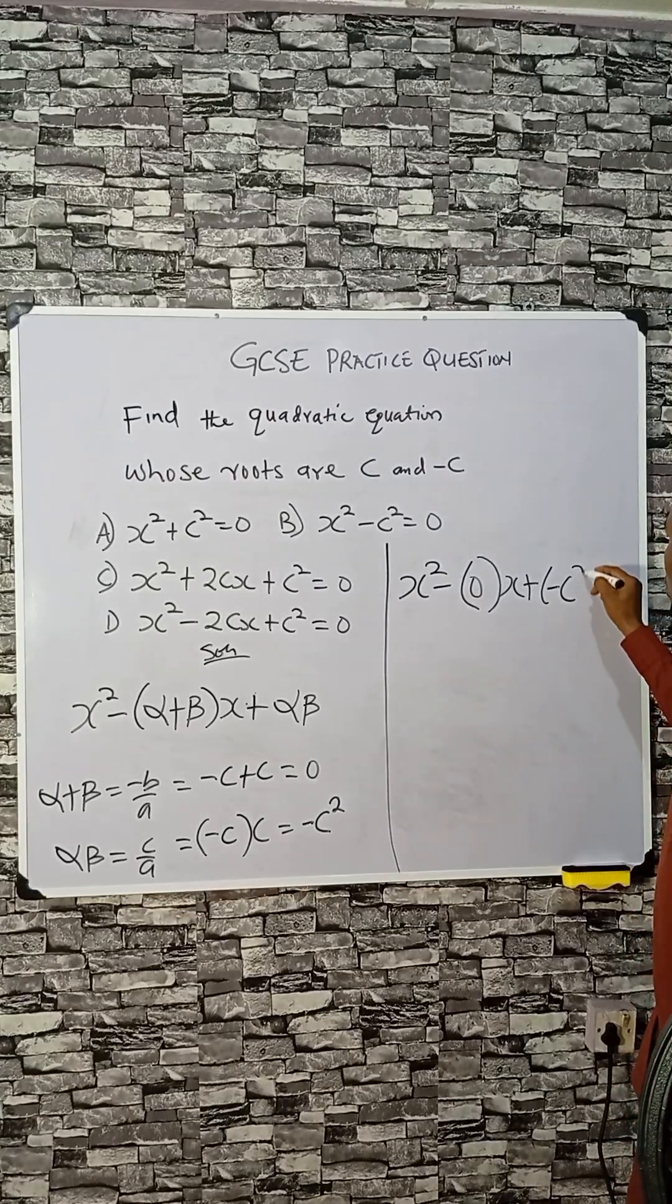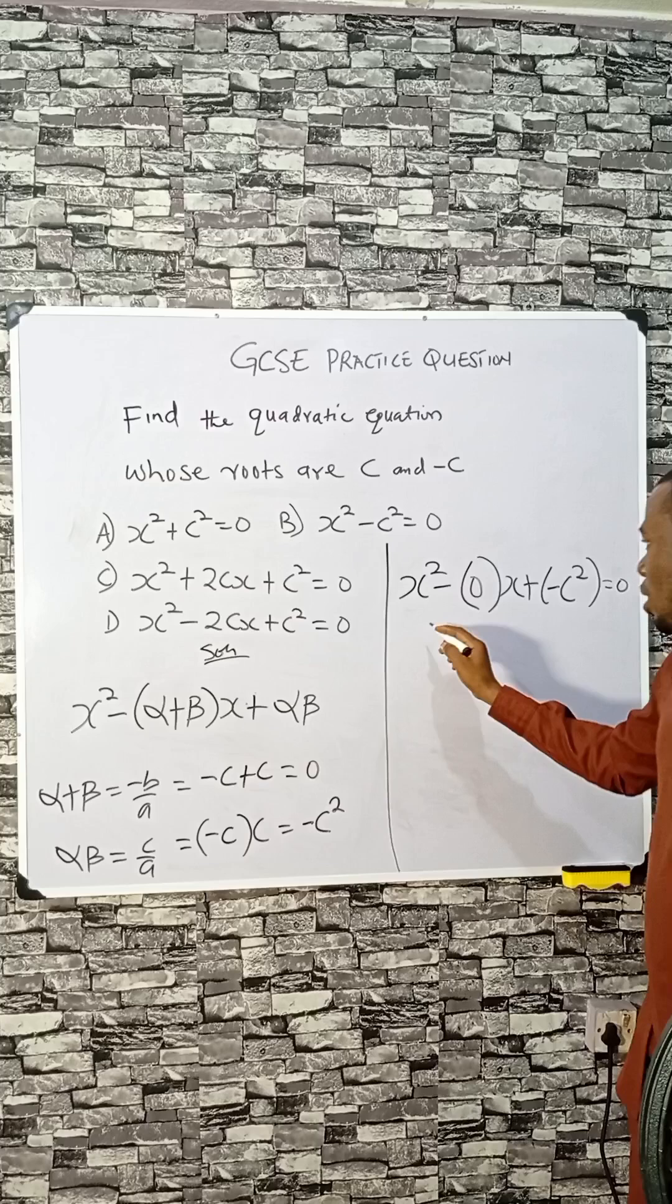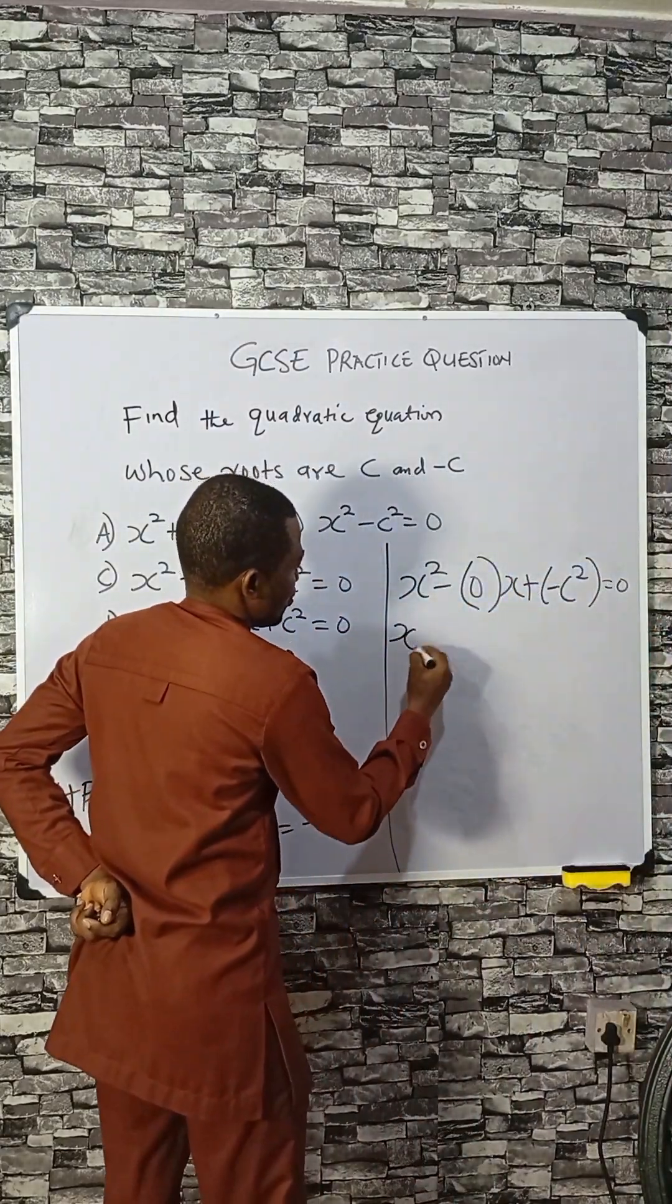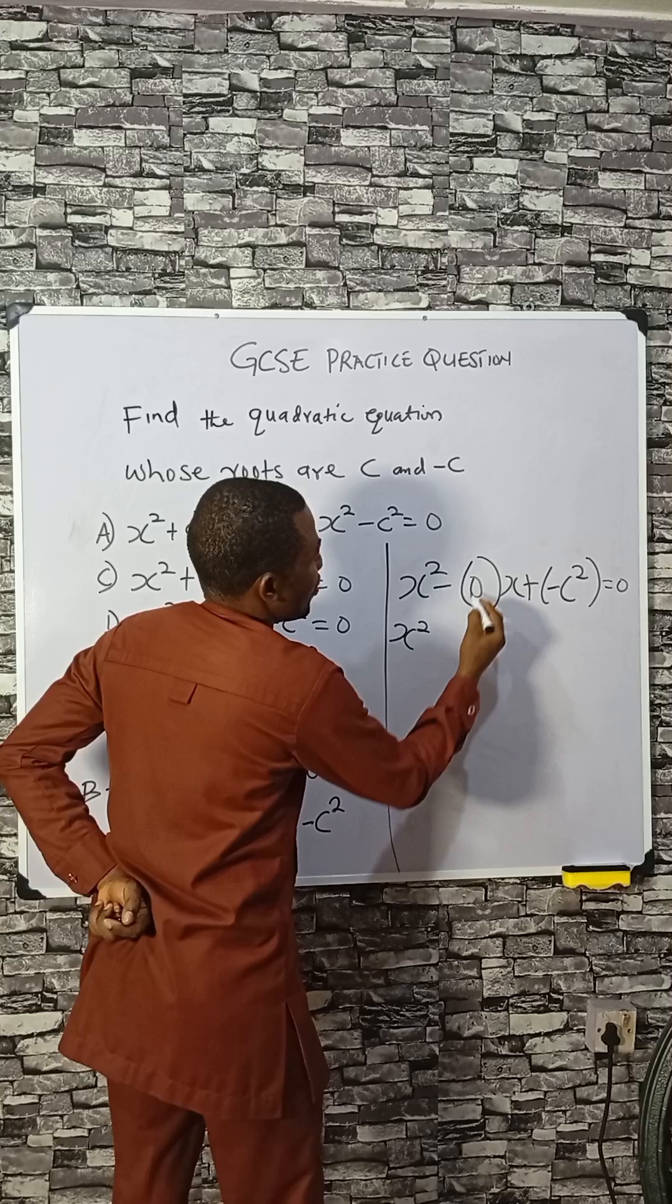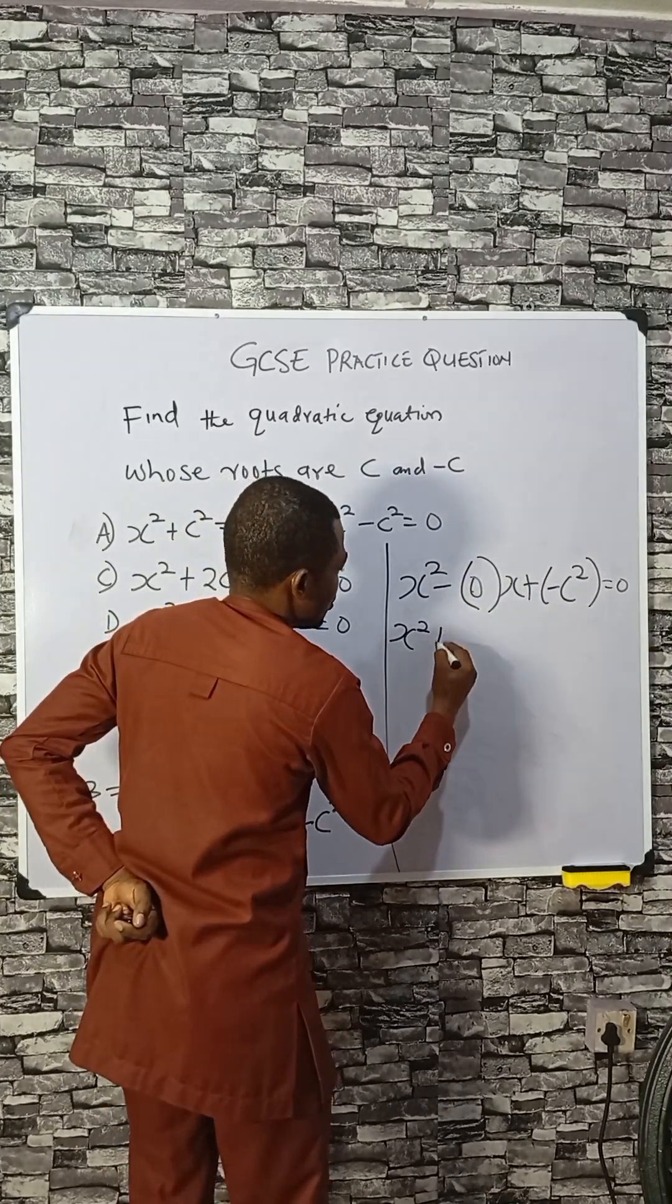put minus c squared, and it's equal to zero. Now we have x squared here will give you zero, because zero times x is zero. So plus